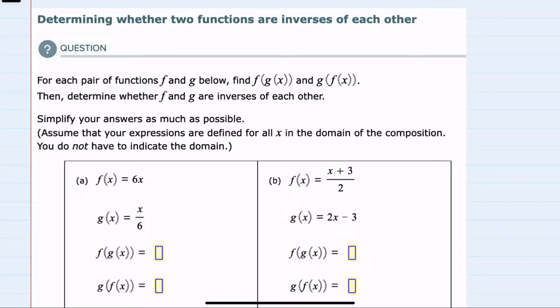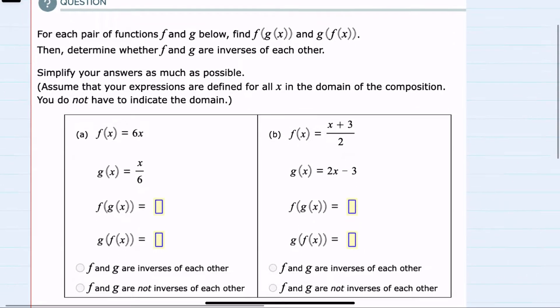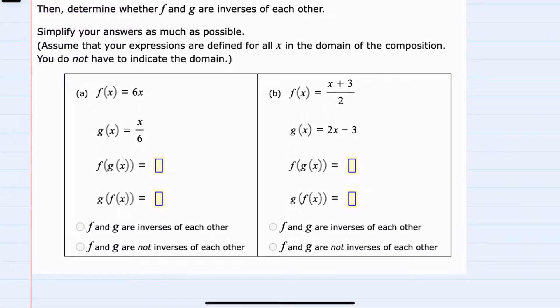In this video, I'll be helping you with the Alex problem type called determining whether two functions are inverses of each other. We're given two problems here, a and b. Each has an f function and a g function, and we are asked to find a couple of things. We're asked to find f of g of x, we're asked to find g of f of x, and use that to determine whether f and g are inverses or not.